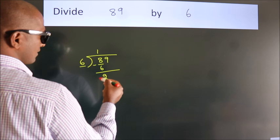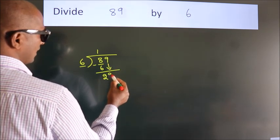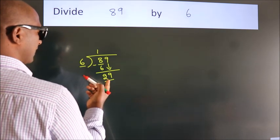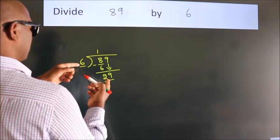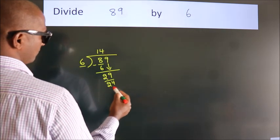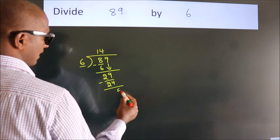After this, bring down the next number. So, 9 down. That's 29. A number close to 29 in the 6 table is 6 times 4 equals 24. Now we subtract and get 5.